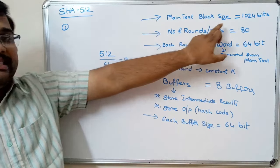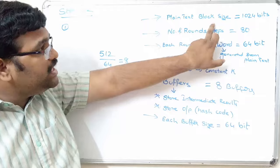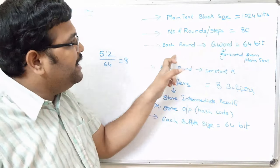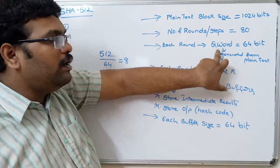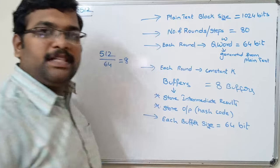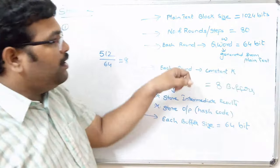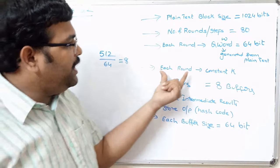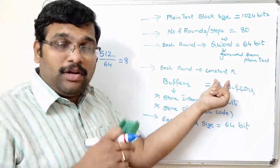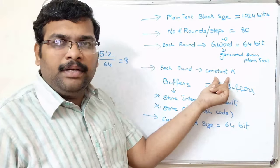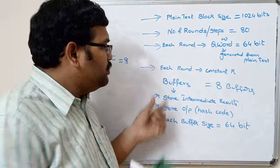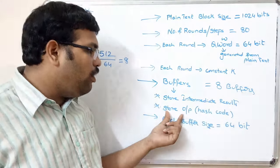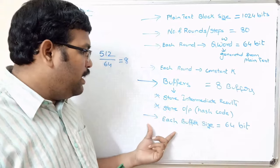The plain text is processed in blocks; each block size is 1024 bits and there are 80 rounds or steps. In each round we use a word, represented as W, which is a 64-bit Q-word generated from the plain text. There is a process to generate the word for all rounds. We also use a constant in each round, which is represented as a hexadecimal random number. Buffers store the intermediate results and the final hash code output, and each buffer is 64 bits.